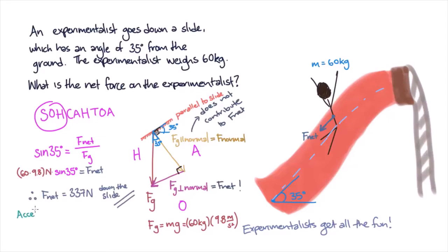Now, if we wanted to find the acceleration of the experimentalist, we know that the acceleration is equal to force divided by mass. So we plug in 337 newtons divided by 60 kilograms, and that gives us 5.6 meters per second squared.